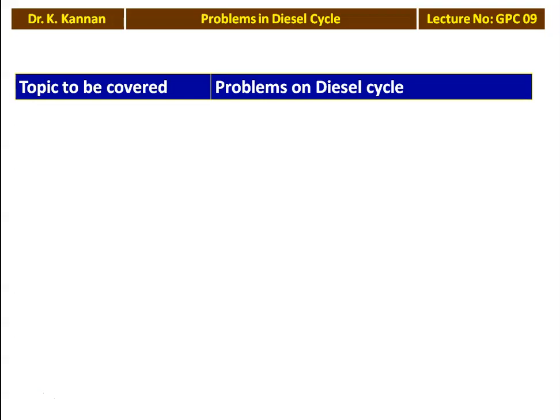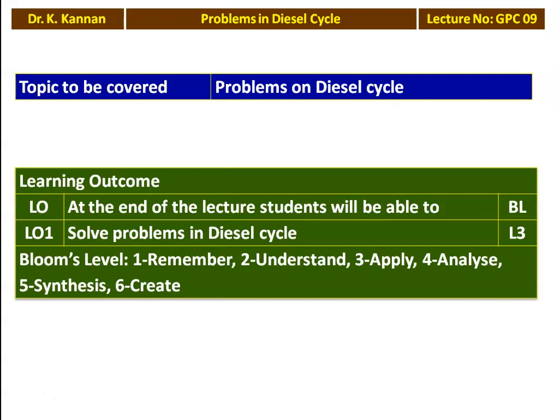In the earlier lecture, lecture number 8, we solved a few problems in the Diesel Cycle. And in this lecture also, we solve additional problems in the Diesel Cycle. All the problems are taken from the Anna University Question Paper, so that it will give confidence to the student by solving a University Question Paper. The learning outcome for this lecture: at the end of the lecture, the student will be able to solve problems in the Diesel Cycle.